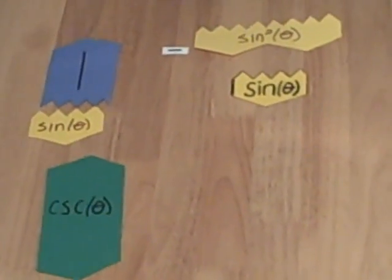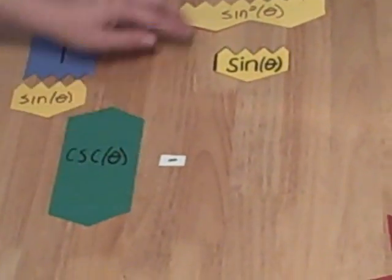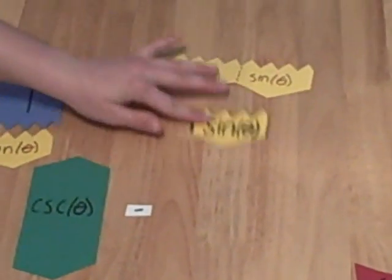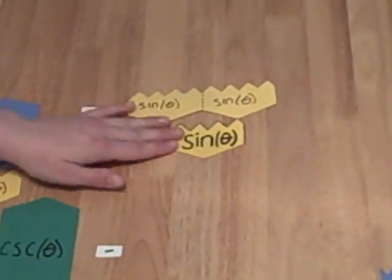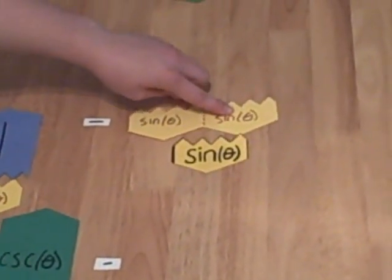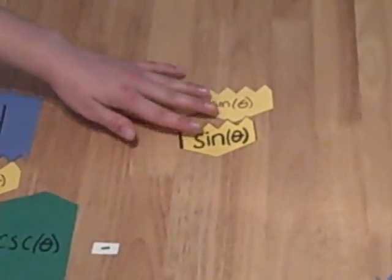Okay, we want to bring down our subtraction sign. And now, we're going to have sine squared, which if we flip this over is sine times sine, divided by sine. We know that we can just pull a sine out of both the denominator and the numerator. So, we will just be left with sine.